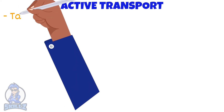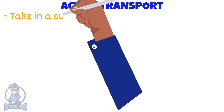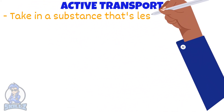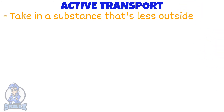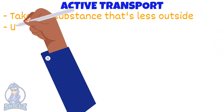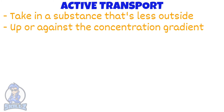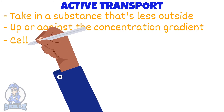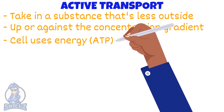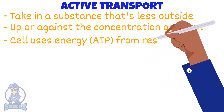As you already know, diffusion happens down a concentration gradient. But sometimes cells need to take in a substance when there is very little of that substance outside — in other words, up or against the concentration gradient. This is known as active transport. During active transport, a cell uses energy from respiration to take up substances.